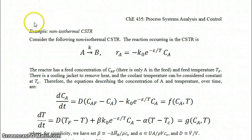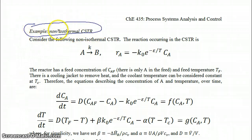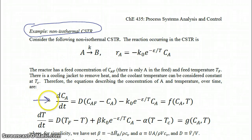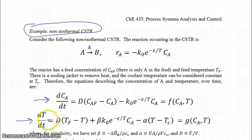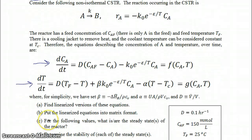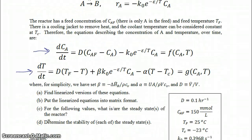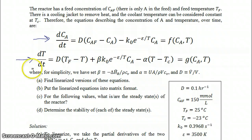In this screencast, we're going to be looking at the example of the non-isothermal CSTR, which starts on page 2-31 of the notes. In this example, you have a material balance for reactor A and also the energy balance for the reactor. You've already seen part of this example, but I'm going to go through the whole thing — A and B fairly quickly, and then focus mostly on C and D.